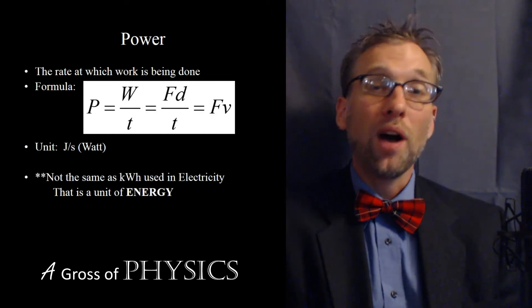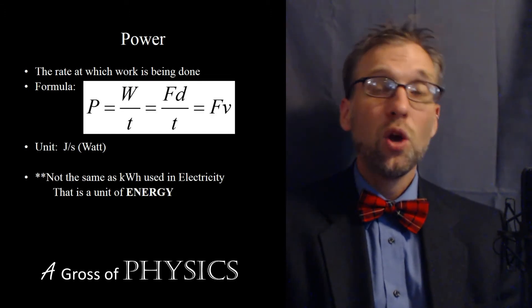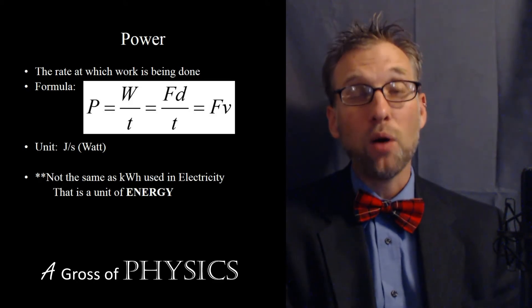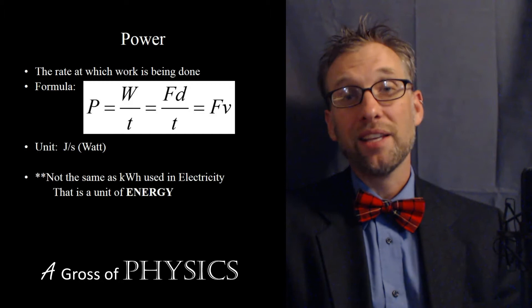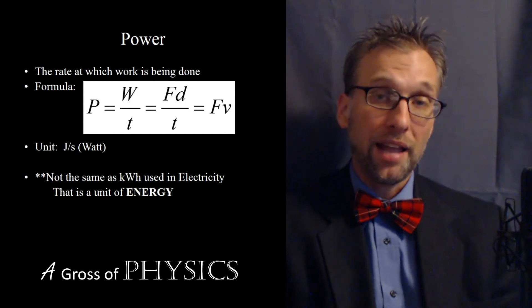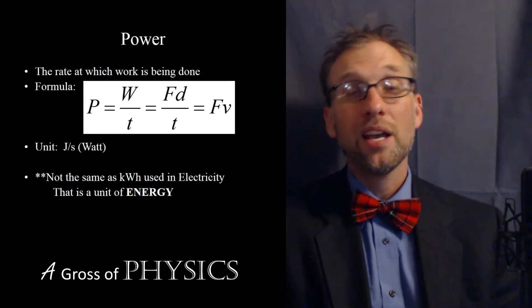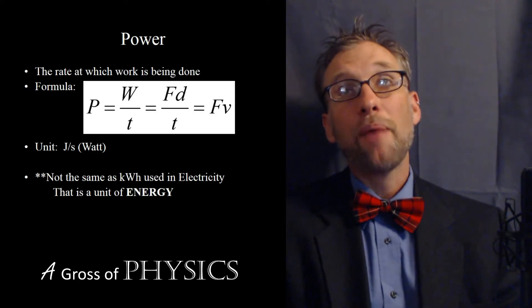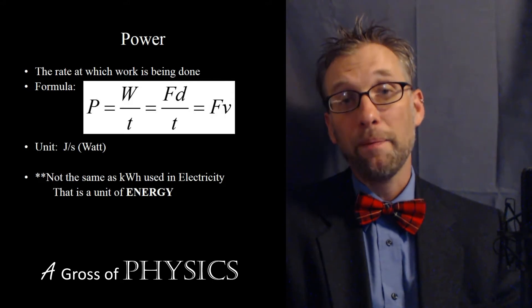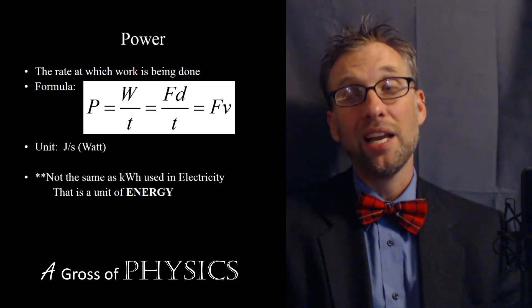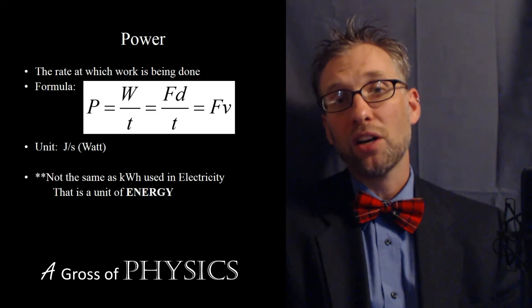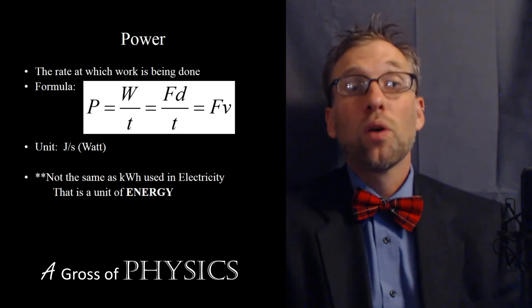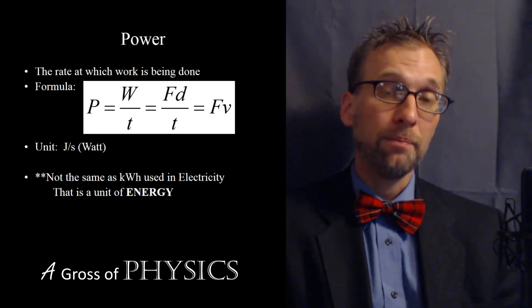Watts will often have a kilowatt in front of it or megawatts or prefixes that denote multiples or powers of watts being done. If that's the case, you're going to replace that letter with times 10 to whatever power it is and then use that accordingly. We have two versions of the power equation. It's work over time or it's the force times velocity. If you're looking for how fast something occurs, you're going to use force times velocity. If you're looking for work or something like that, you're going to use work over time.